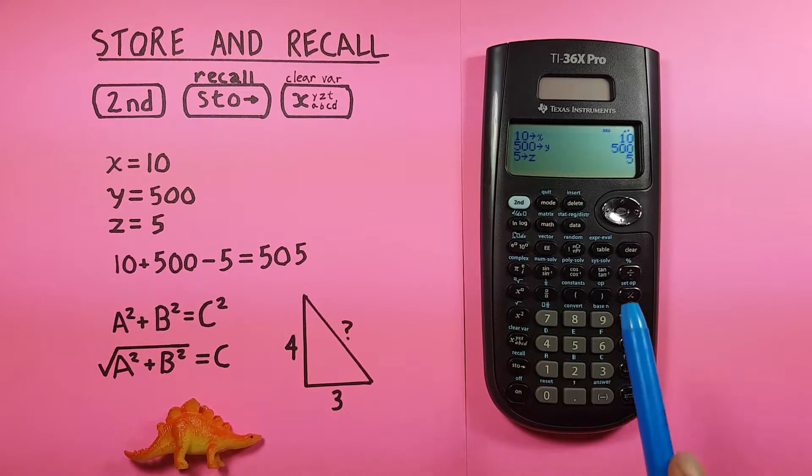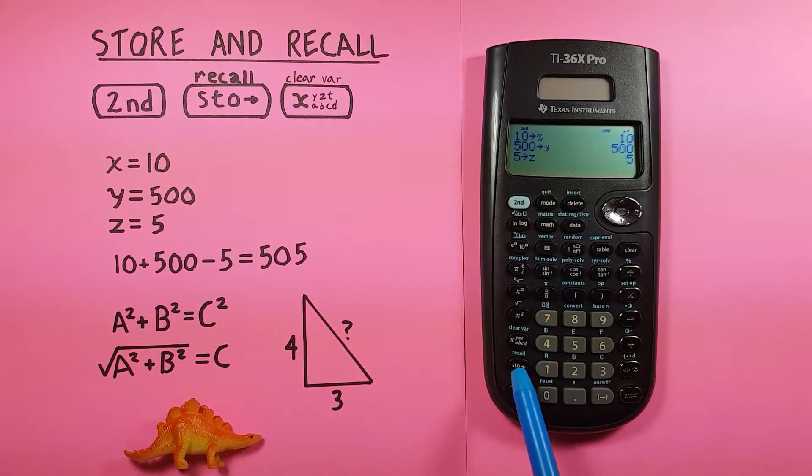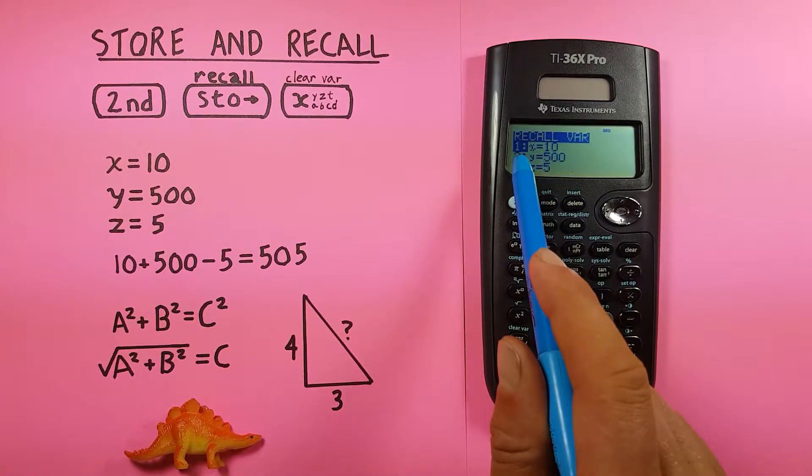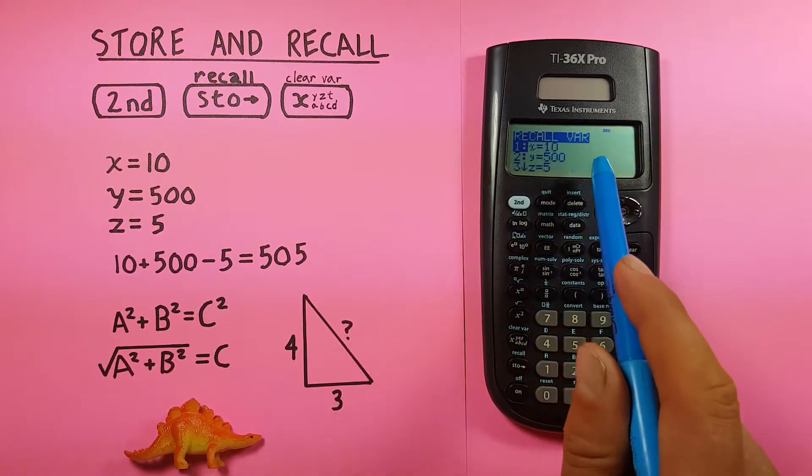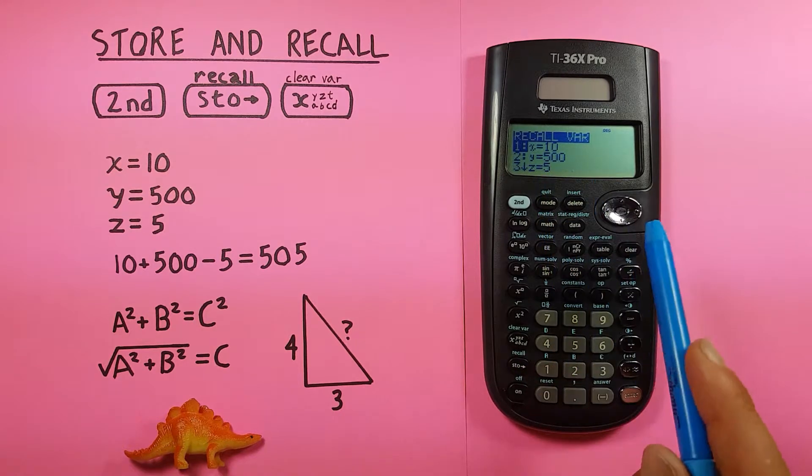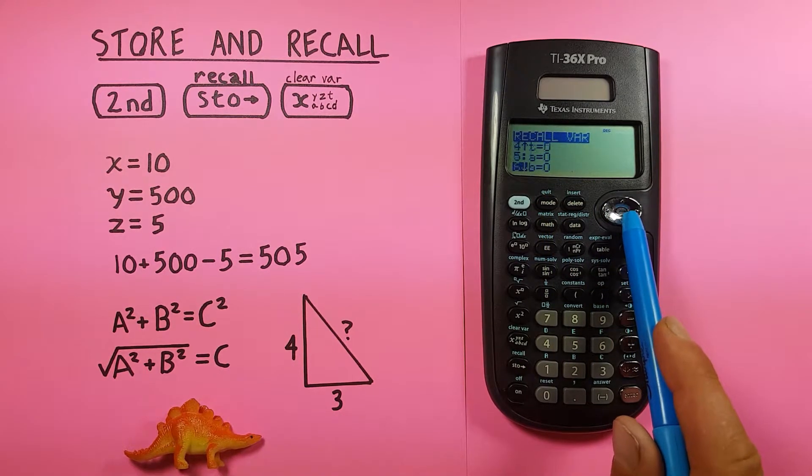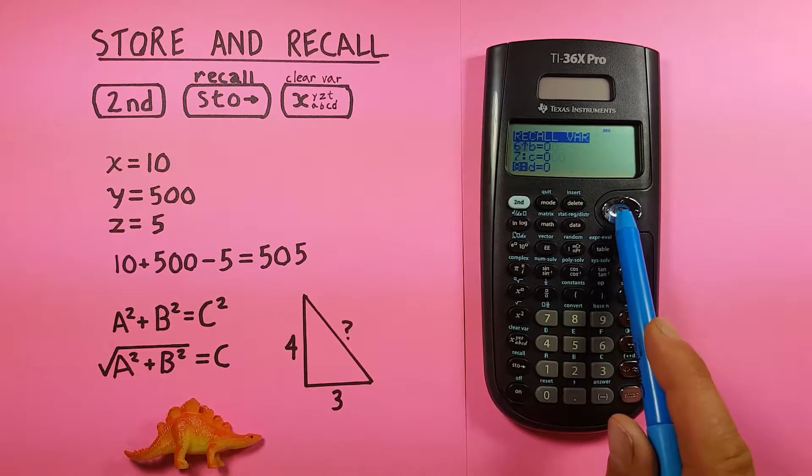And we can confirm these are stored by pressing the second function STO key. This brings up our recall variable menu. You can see X is equal to 10, Y is equal to 500, Z to 5, and if we scroll down, you see there's zeros in all our other slots because there's nothing stored in those.